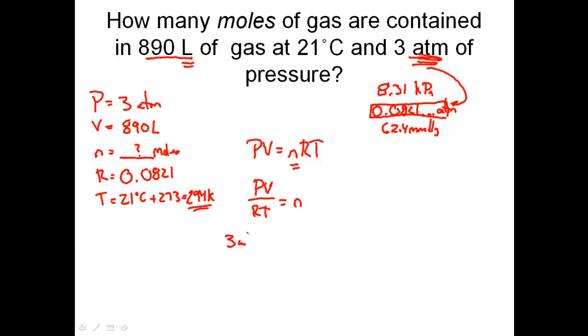Let's start putting things into the equation. Pressure is 3 atmospheres. Volume is 890 liters. R is 0.0821 because we're using atmospheres of pressure. Temperature is 294 kelvins. That's going to give us roughly 111 moles of gas. That was nothing more than 3 times 890 divided by 0.0821 and also divided by 294.